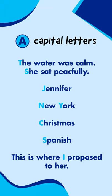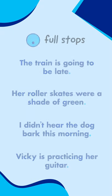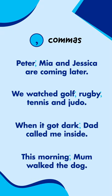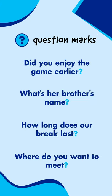Capital letters are used for the start of sentences, names, and I. Full stops go at the end of sentences. Commas go in the middle of sentences to separate words in a list or parts of a sentence. Exclamation marks go at the end of sentences and add emphasis. And question marks go at the end of questions.